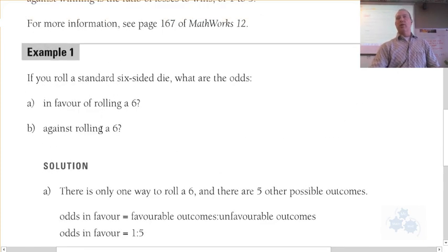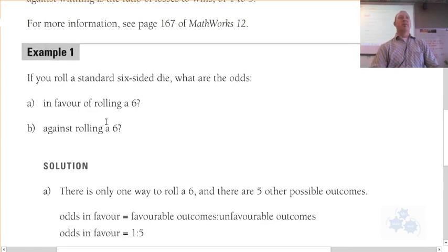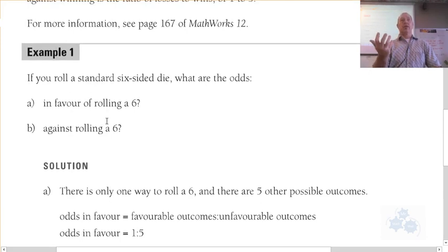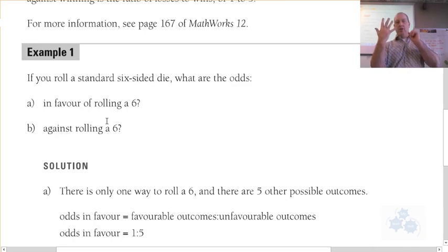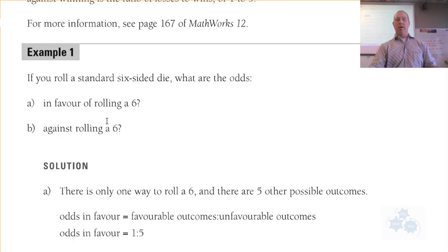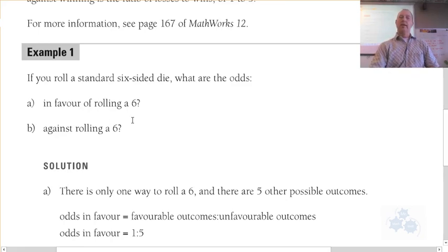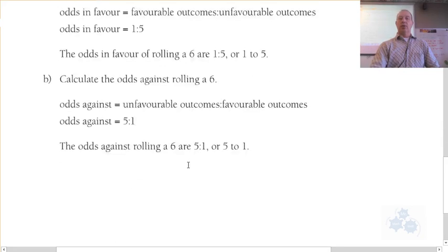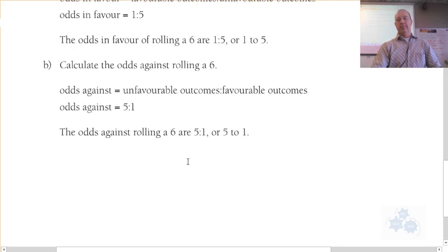What are the odds against rolling a 6? The not-a-6 options would be 5, versus 1 positive. So the odds against rolling a 6 are 5 to 1.